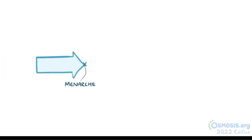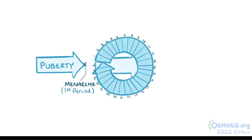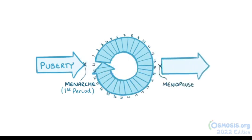Menarche, which refers to the onset of the first menstrual period, usually occurs during early adolescence as part of puberty. Following menarche, the menstrual cycle recurs on a monthly basis, pausing only during pregnancy until a person reaches menopause, when her ovarian function declines and she stops having menstrual periods. The monthly menstrual cycle can vary in duration from 20 to 35 days, with an average of 28 days.